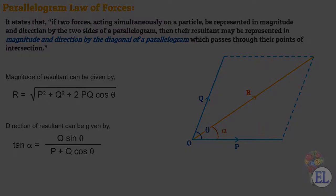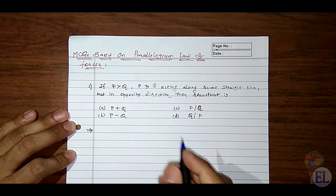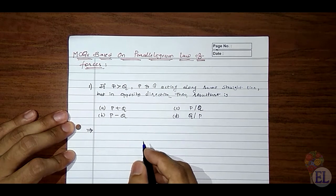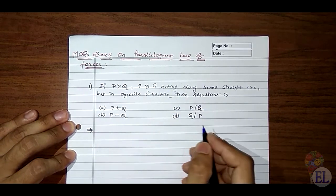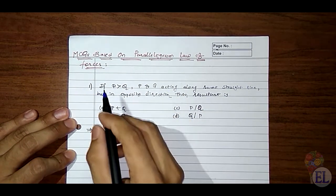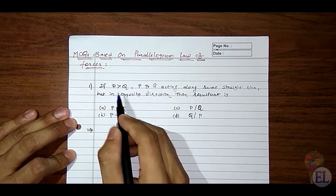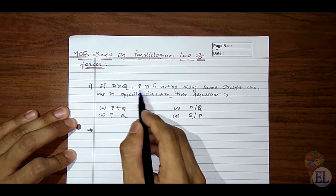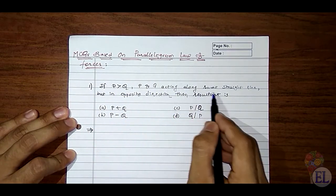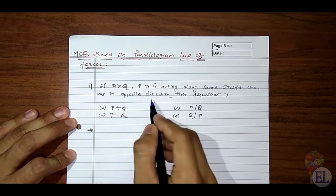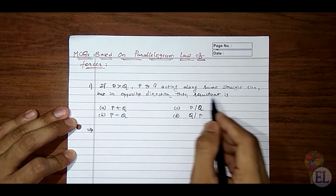This is the key to the following MCQs. Let us start with the first MCQ of Season 1, Episode 1, based on forces. The first question is: if P is greater than Q, and P and Q are acting along the same straight line but in opposite directions, then the resultant is?